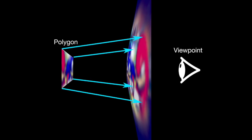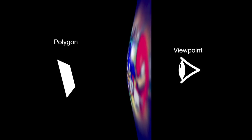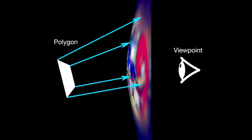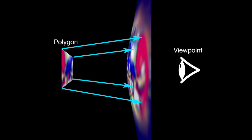It didn't work quite like that but it's close enough for this discussion. If the polygon was at a different angle the reflected lines would cross the texture at different points and we'd end up with a different part of the texture on the polygon. The key takeaway is that for environment mapping to work you have to be able to map any part of a texture onto any corner of a polygon.